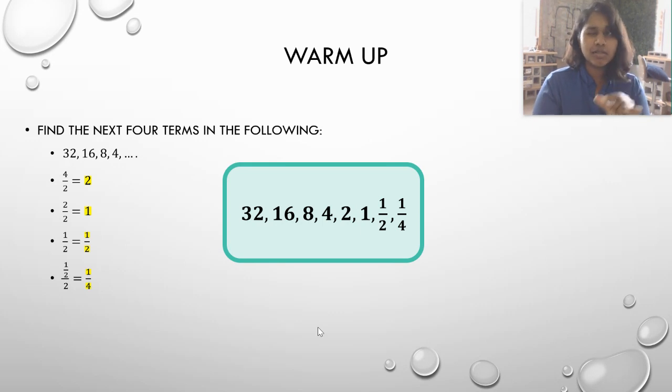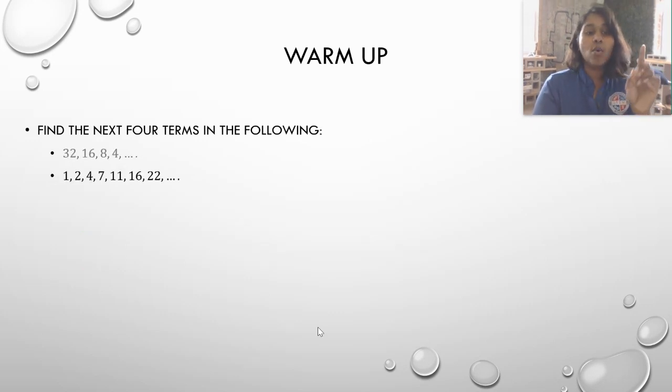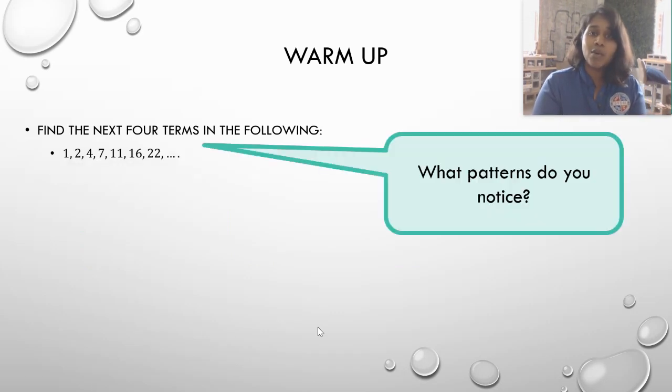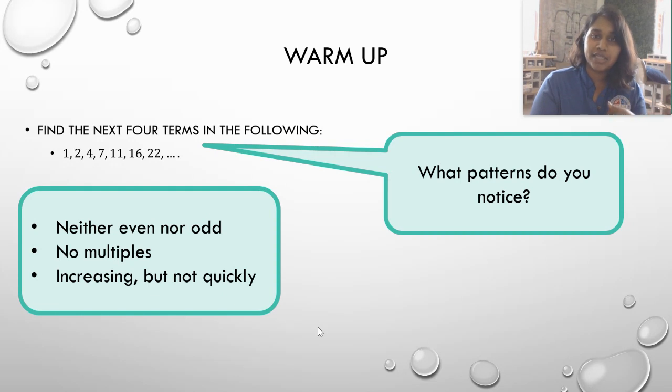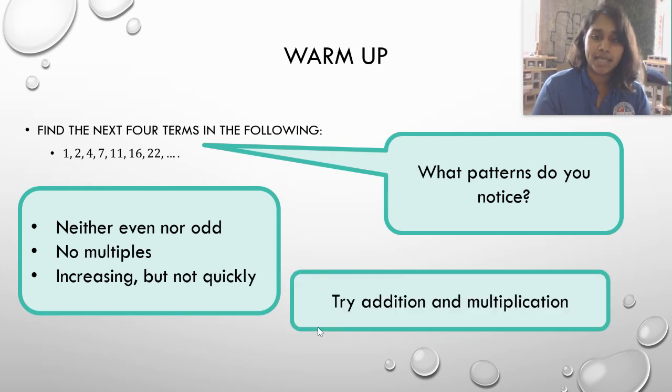But let's try one just a little harder. What if I have 1, 2, 4, 7, 11, 16, and 22? So again, what patterns do I notice? Well, it's neither odd nor even. It is not a multiple of anything. And it is increasing, but not very quickly. So more than likely it's addition, but I'm going to try multiplication just in case.